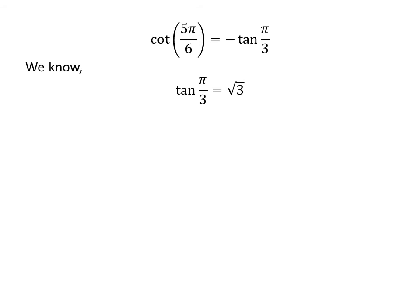We know tangent of pi upon 3 is equal to square root of 3. So cotangent of 5 times pi upon 6 is equal to minus square root of 3.